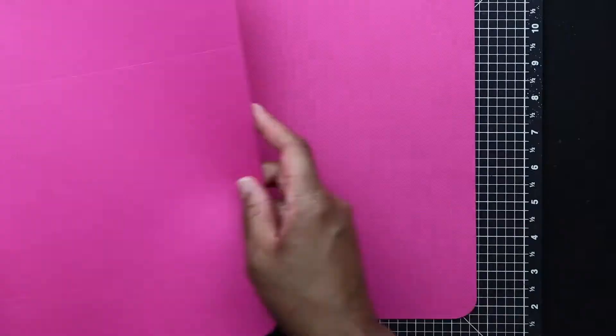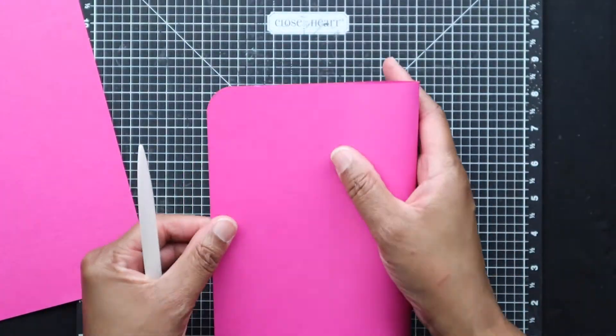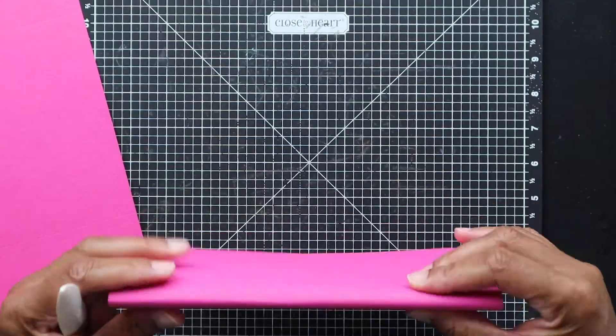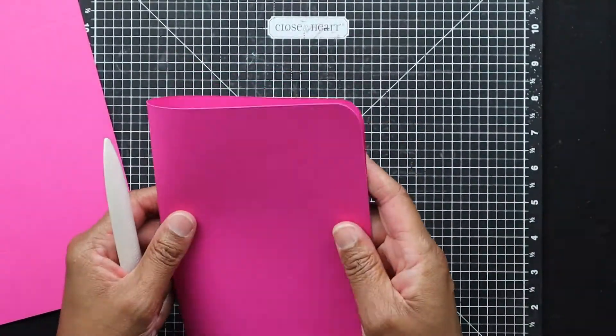So here we have cut our three pieces. Actually, right now all I'm doing is going over the score lines with my bone folder.